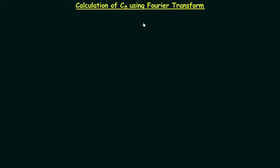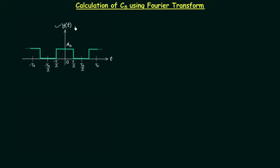In this lecture we will understand how we can calculate the complex exponential Fourier coefficient Cn using the Fourier transform. We know Cn is part of the complex exponential Fourier series, and Fourier series is only used for periodic signals. Taking a periodic signal yt with complex exponential Fourier coefficient Cn, we have Cn equal to Xnω0 divided by T0, where T0 is the fundamental time period. Now we will understand what Xnω0 is.